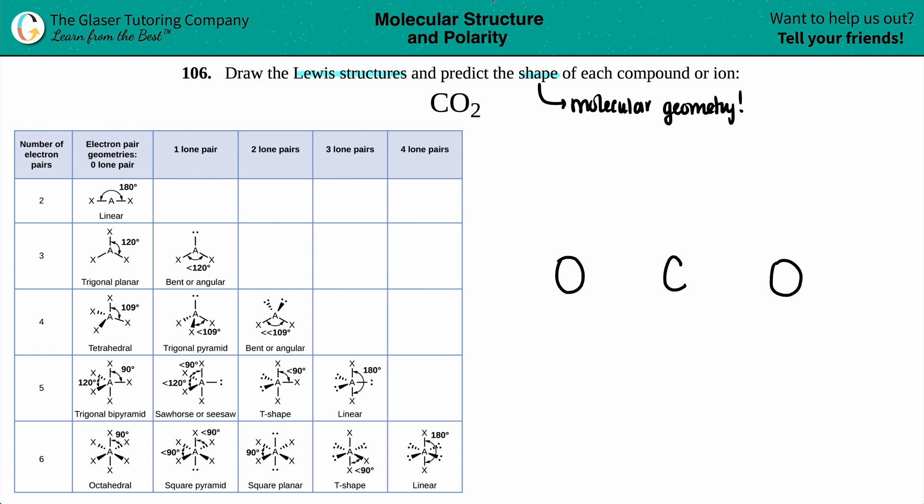For carbon, carbon's in group 4A or 14 depending on what your periodic table says, it's got four valence electrons. And each oxygen has six valence electrons. So 1, 2, 3, 4, 5, 6 and then 1, 2, 3, 4, 5, 6. Always draw your single bonds first just to see if you have the octet and then you can add more bonds.